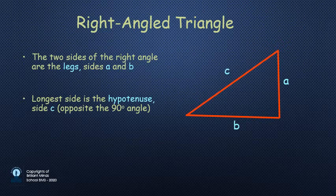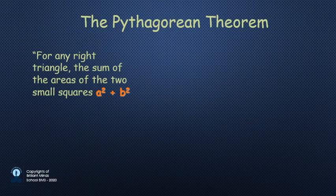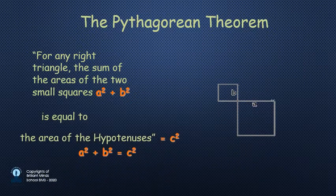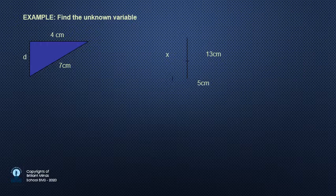The theorem says that if we draw a square on the hypotenuse, then its area will be equal to the sum of two areas, the areas drawn on the other two sides as we see. Let's apply that in the next example.